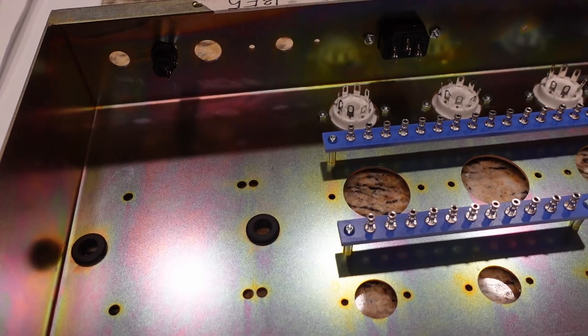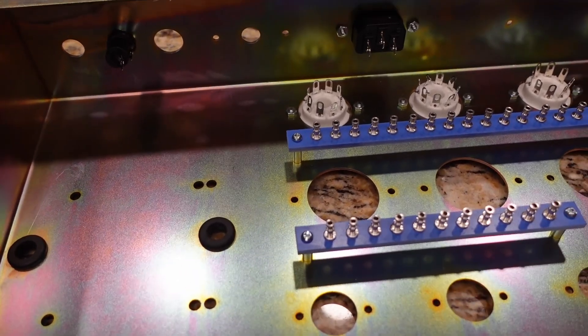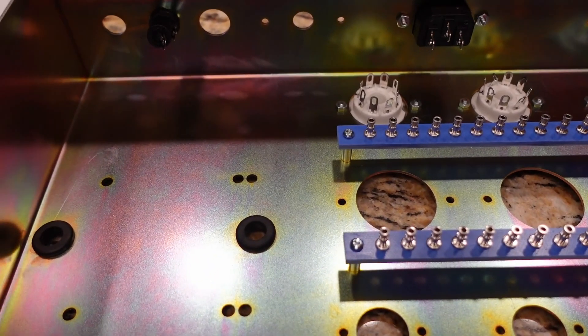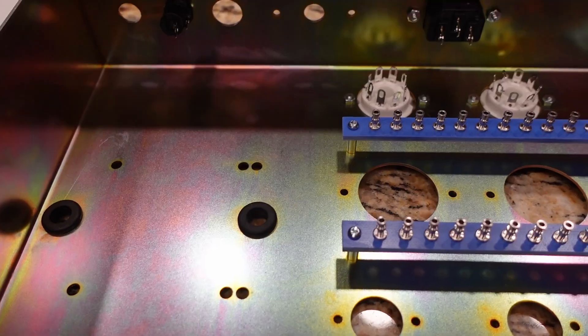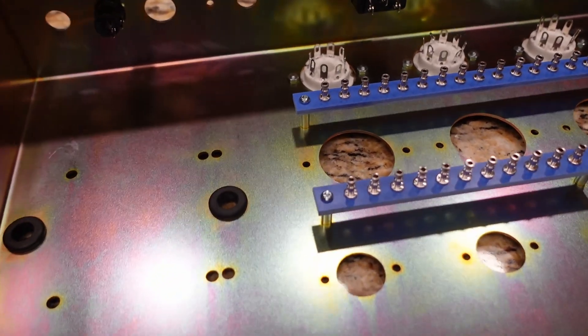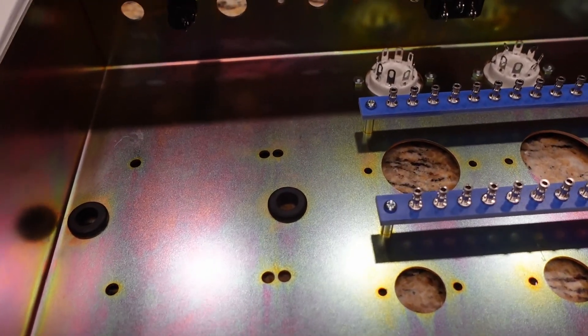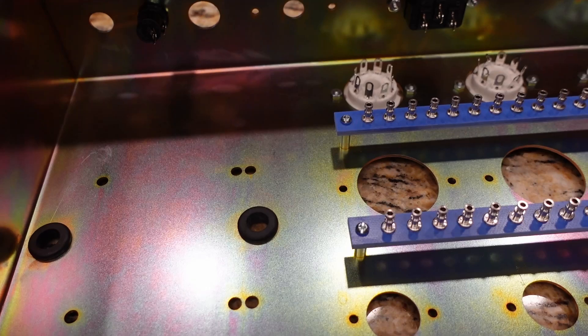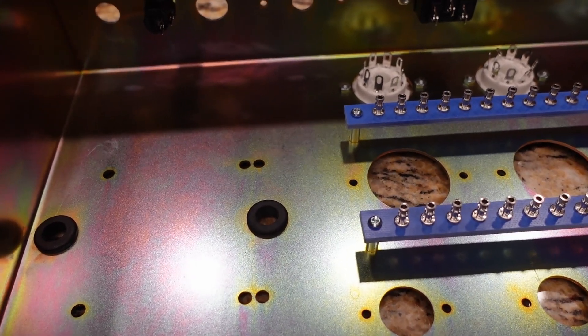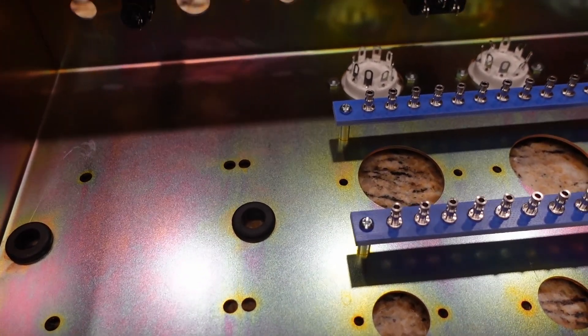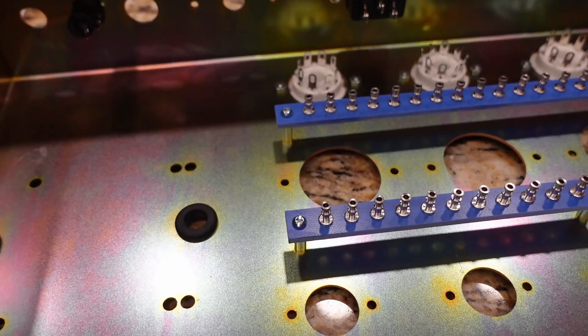First rule of component assembly is your mechanical connection first and then your solder connection. A good mechanical connection will be anywhere from three quarters to a full wrap around the turret, or a good eighth of an inch depth into the top of the turret. Then you apply your solder.